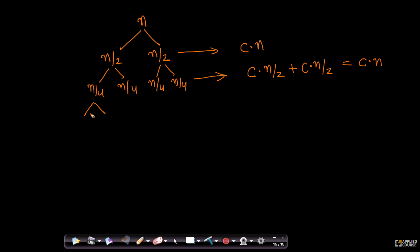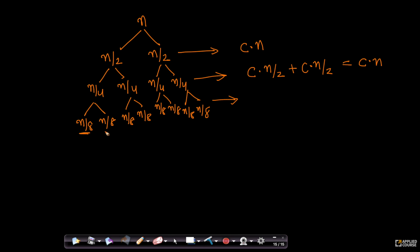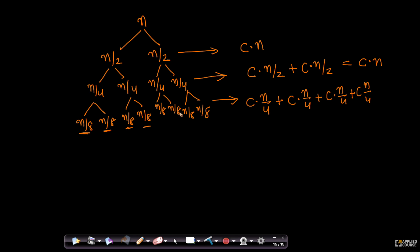Going further, each sub-array is broken into n/8 pieces. To merge two arrays of size n/8 each costs c·(n/8 + n/8) = c·(n/4). There are four such merges at this level, giving c·(n/4) × 4 = c·n. So again, every level of the tree contributes exactly c·n in total merge cost.